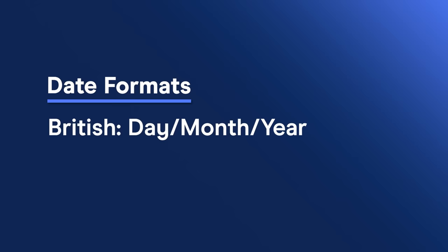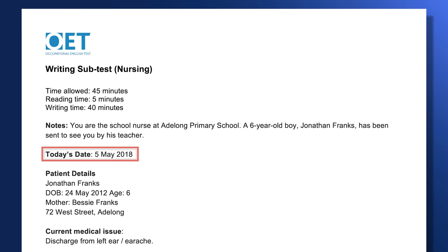The next thing to write is the date. In the exam, the date will be included in your case notes, and you can use either British or American standard date format. In the British format we put the day before the month, while the American format starts with the month. Both are acceptable, but you need to be consistent throughout your letter. Here the date is May 5, 2018 — convenient as both the day and month are the same number. In the letter, put the day, month, and year separated by slashes, which is the most commonly used separator in the all-numeric date format.